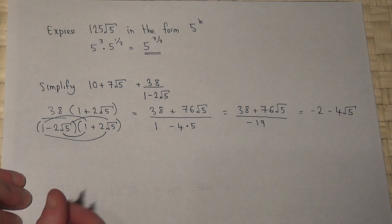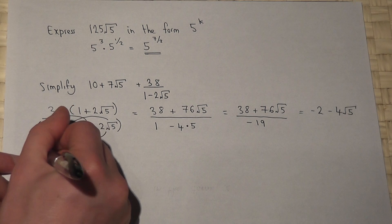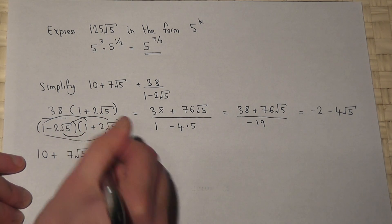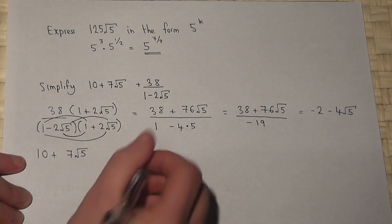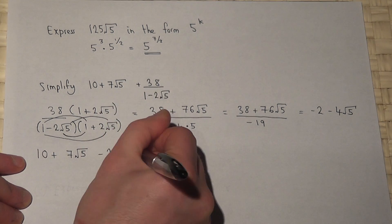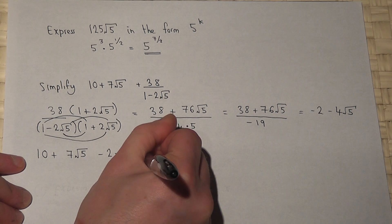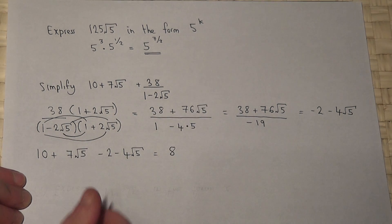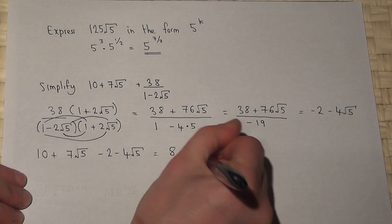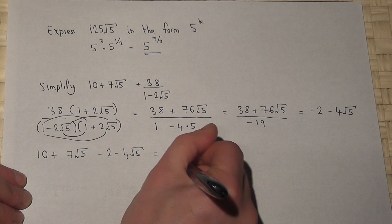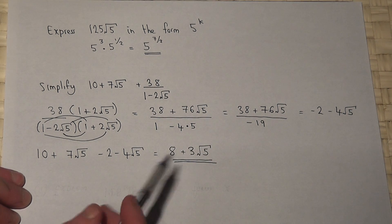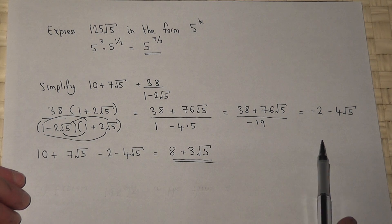Going back to the original question, we've got a 10 and a 7 root 5, and the fraction is the same as minus 2 take away 4 root 5. So 10 take 2 is 8, and 7 root 5 take 4 root 5 is 3 root 5. Therefore the answer in its simplest form is 8 plus 3 root 5.